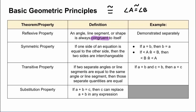Our next theorem is our symmetric property, which is that if one side of an equation is equal to the other side, then they are interchangeable. This is just a fancy way of saying that you can swap the left and right-hand sides of an equation — something familiar from algebra. So if A is equal to B, then B is equal to A. And in a more geometric sense, if angle A is congruent to angle B, then angle B is congruent to angle A.